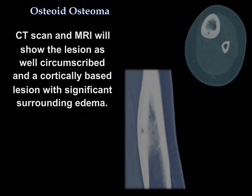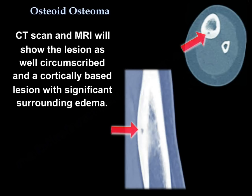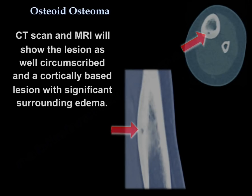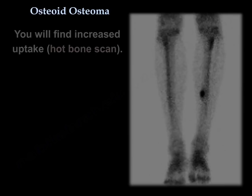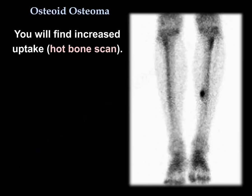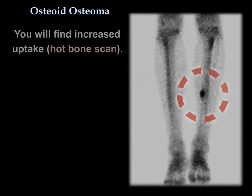CT scan and MRI will show the lesion as a well-circumscribed, cortically-based lesion with significant surrounding edema. You will also find increased uptake on a hot bone scan.